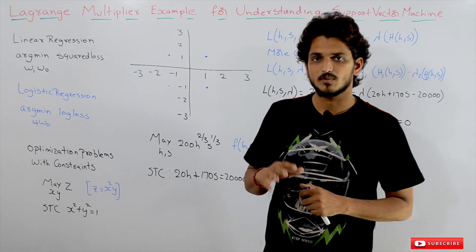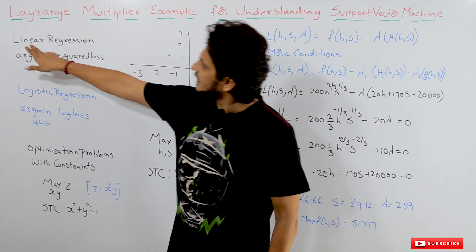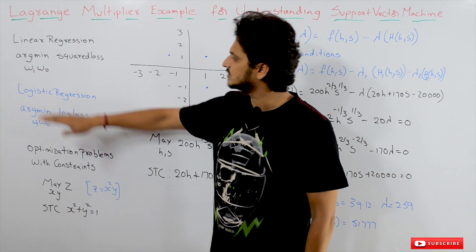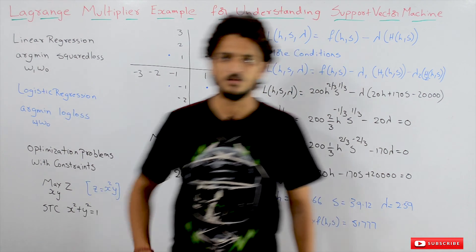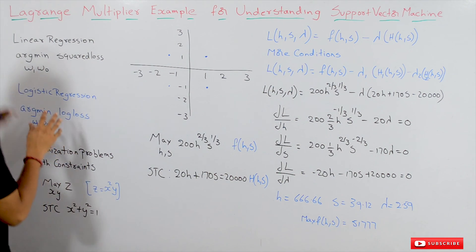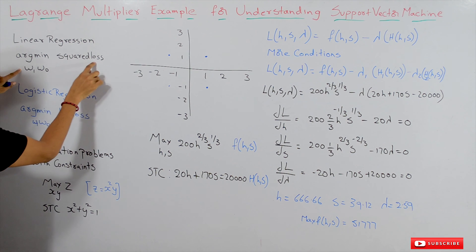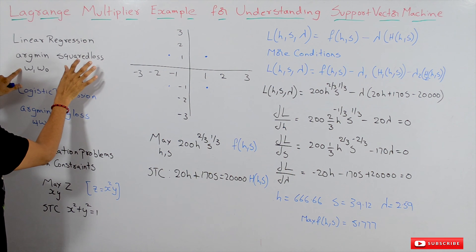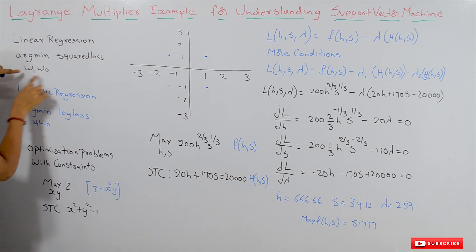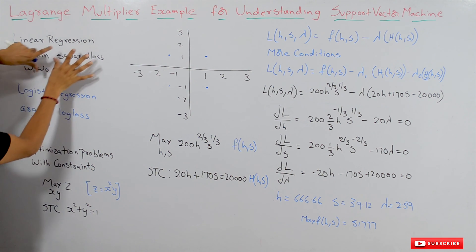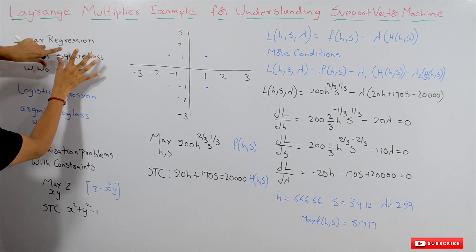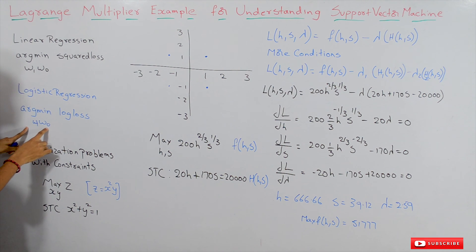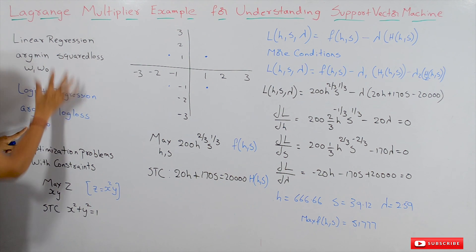What's the optimization problem which we discussed in our previous classes? In linear regression we defined an optimization problem, and same way in logistic regression we defined an optimization problem. The loss function we defined is square loss — at what w1 and w0 we are having minimum loss value. The same way in logistic regression, at what w1 and w0 we are having minimum loss — this is what we identify.